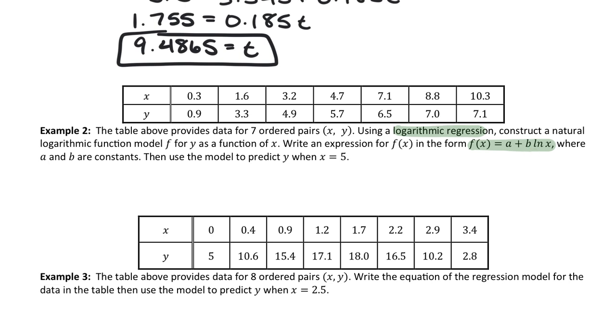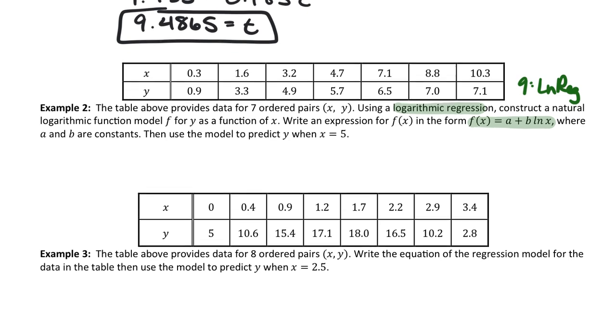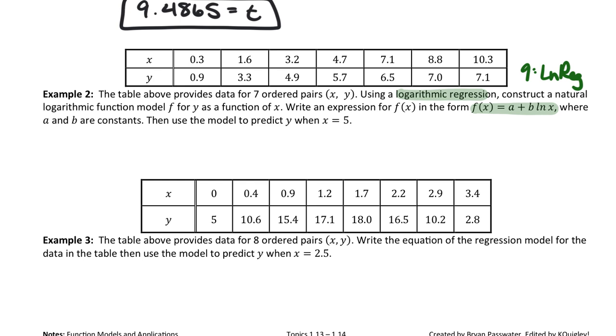We want to go choose the correct regression here. And this one says that we want a logarithmic regression in the form with the natural log. So we want to choose option nine. Maybe write that down for yourself that this one is option nine. We always store the regression equation in Y1. So alpha, trace, enter. And then we calculate. These numbers is what we should have gotten. So when we write our equation, we would say that y would be equal to 2.8636 plus 1.8185 times the natural log of x. You don't know what any of this means yet because we haven't studied natural log. But we trust the process.